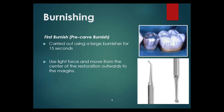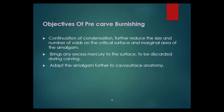After condensation in increments, the next step is burnishing. Pre-carving burnish is carried out using a large burnisher for 15 seconds, using light force and removing from the center of the restoration outwards to the margins. Objectives of pre-carve burnishing are continuation of condensation, further reduction of voids in critical surface and marginal areas, bringing excess mercury to the surface to be discarded, and adapting the amalgam to the cavity surface anatomy.